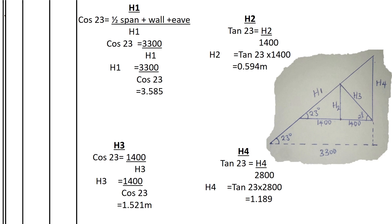For H3, the strut, it is the hypotenuse of the triangle formed by a height of H2 and a pitch of 23 degrees. Using cos 23° equals 1400 over H3, H3 works out to 1.521 meters.